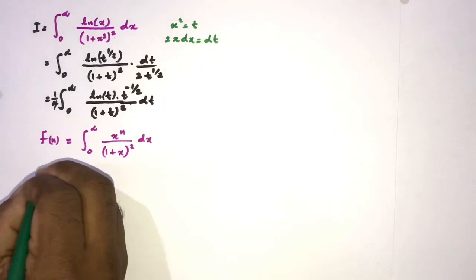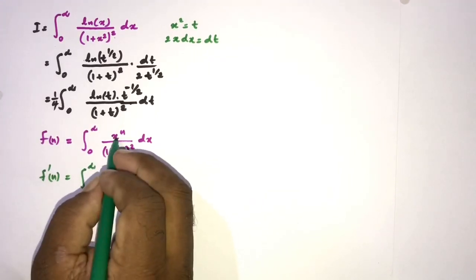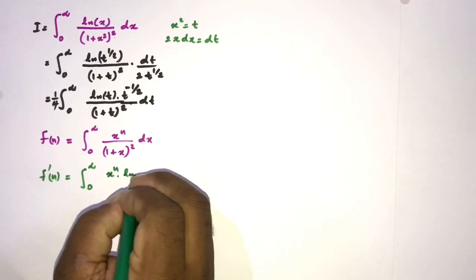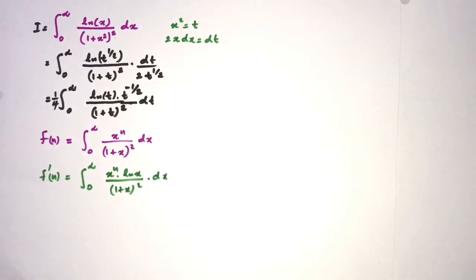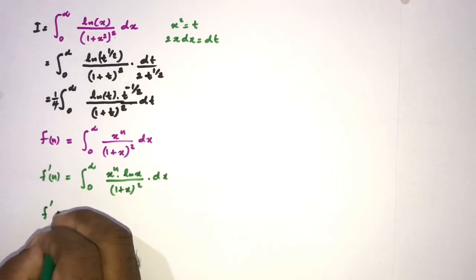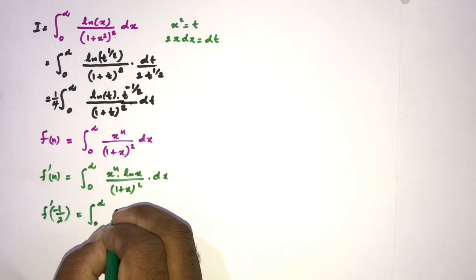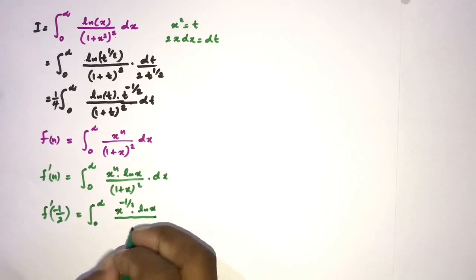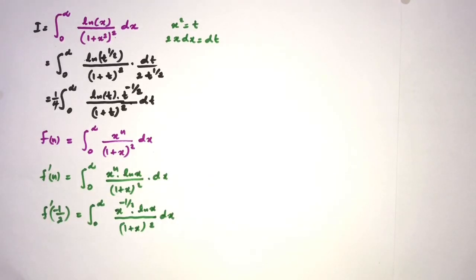If we differentiate with respect to n, we get f'(n) equals the integral from 0 to infinity of x to the n times natural log of x, over 1 plus x squared, dx. Then if we plug in n equals minus one-half, we get the integral from 0 to infinity of x to the minus one-half times natural log of x over 1 plus x squared, dx.